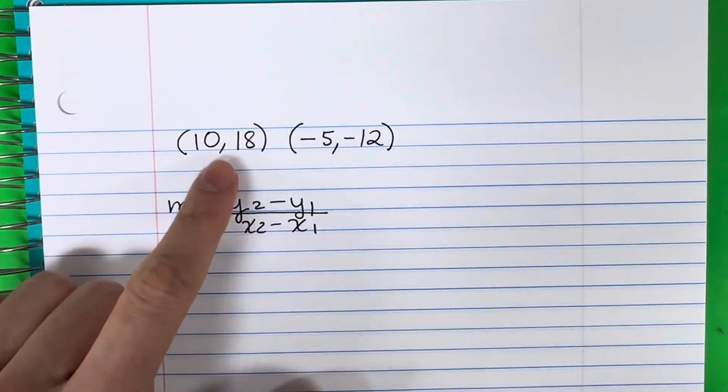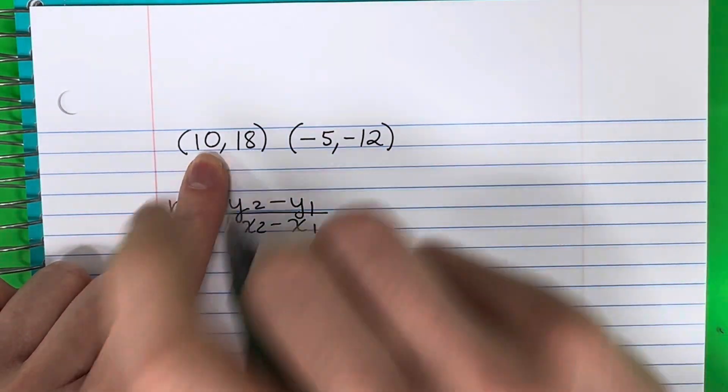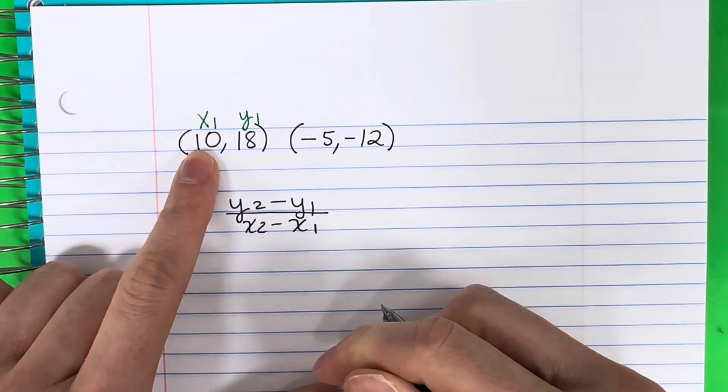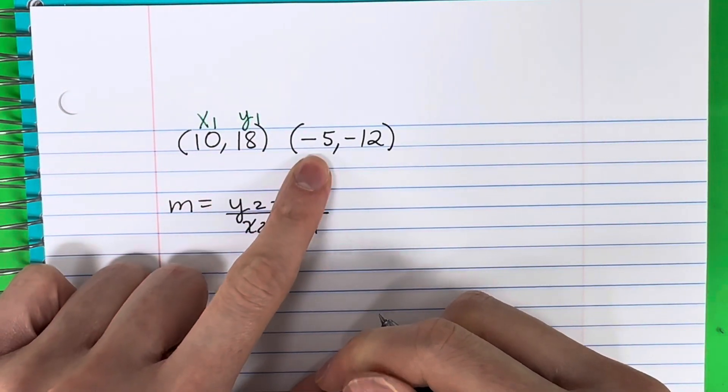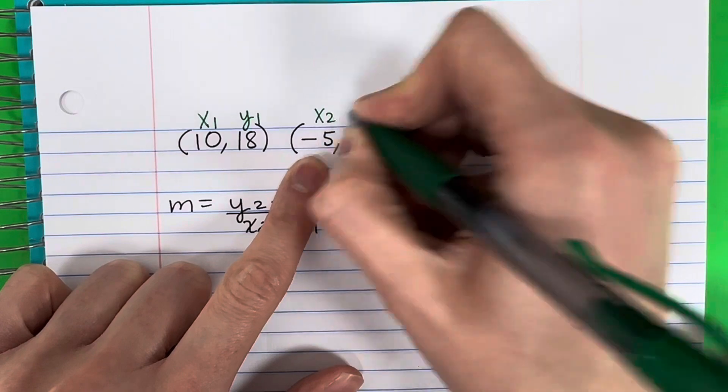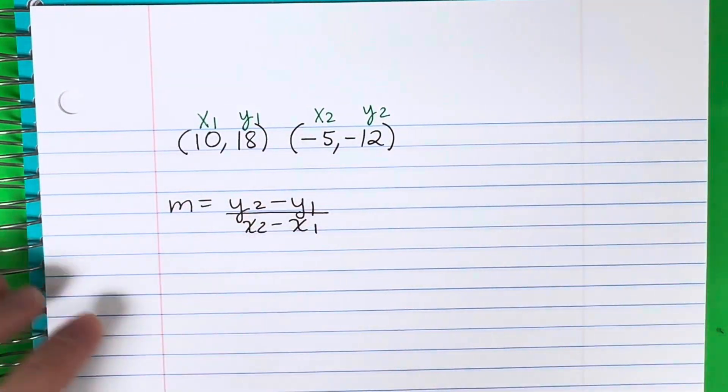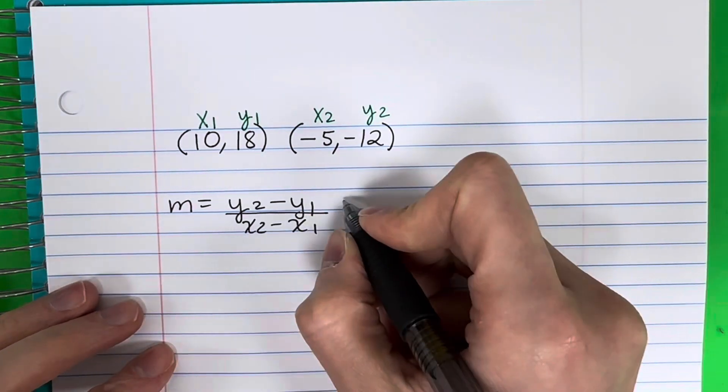So my first point, we're going to put x1, y1. This is my first x, my first y. And then for my second point, it's x2, y2. Now we're going to put the numbers in my formula.